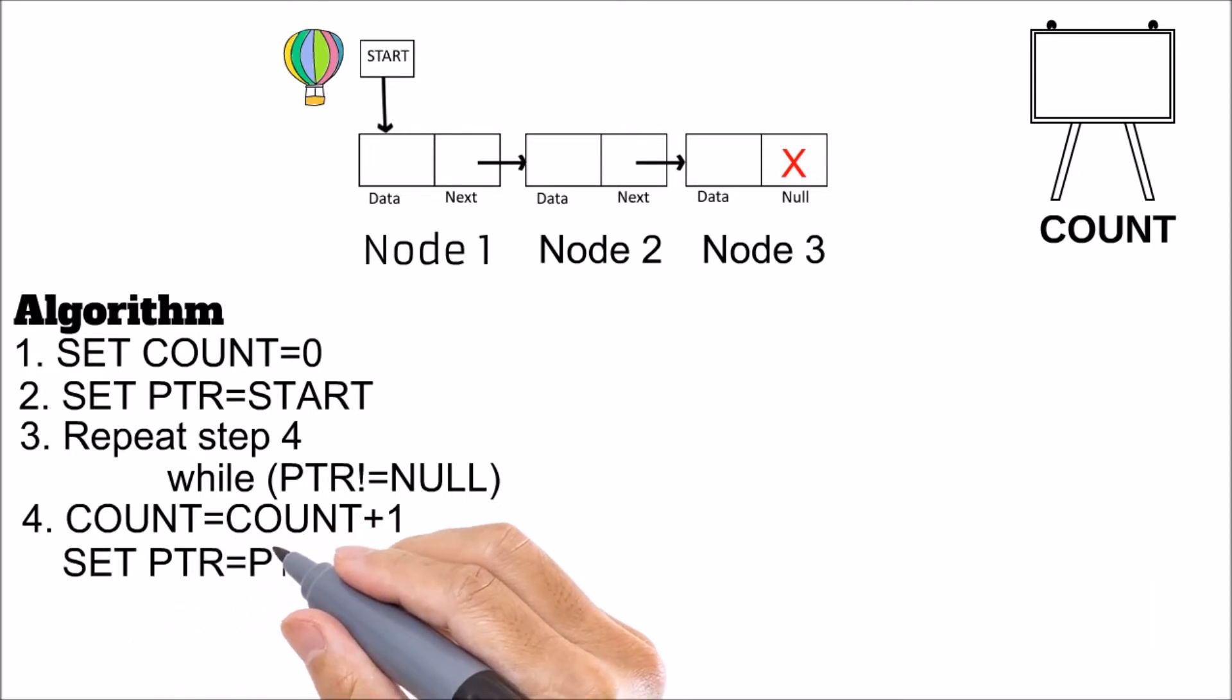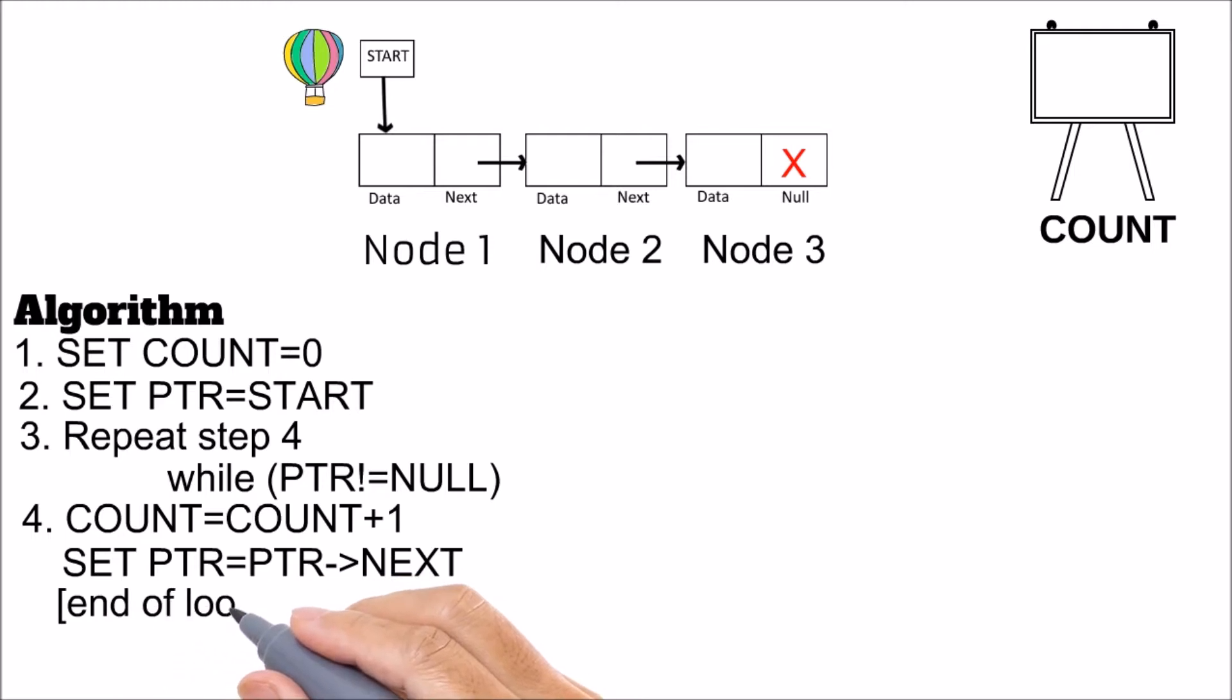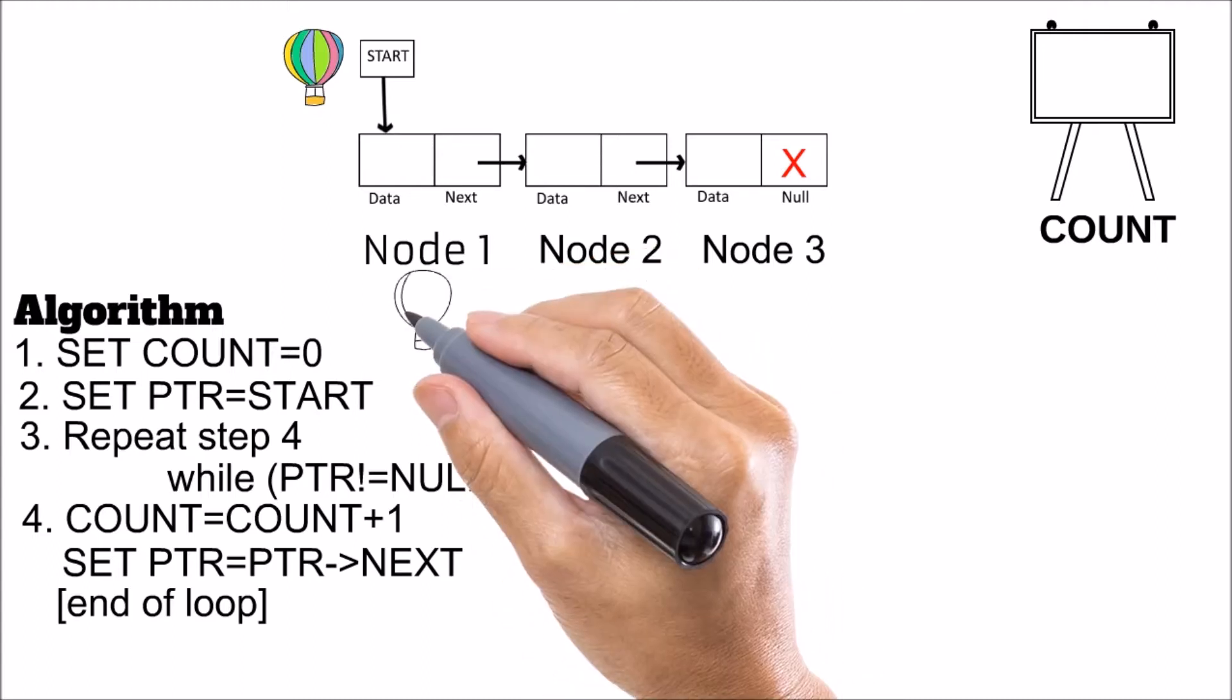And then we will set PTR equal to PTR next. That means when we don't find the null value, we will simply go to the next node, increment the value of count by 1, and go to the next part which holds the address of the next node.